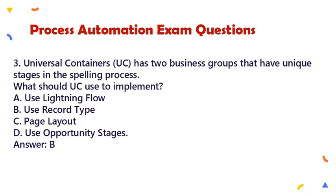Question 3: Universal Containers has two business groups that have unique stages in the selling process. What should UC use to implement this? a. Use Lightning Flow, b. Use Record Type, c. Page Layout, d. Use Opportunity Stages. Answer: b.